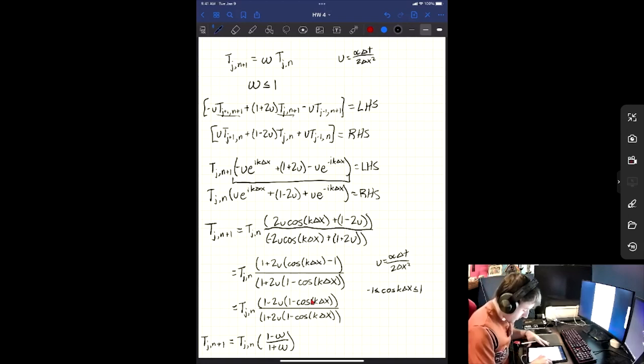So this proves that the Crank-Nicholson method has stability no matter what position step or time step you use. And using von Neumann method, that's how we prove its stability. So when you graph it, no matter what time step or position step you choose, your graph is always going to be stable.